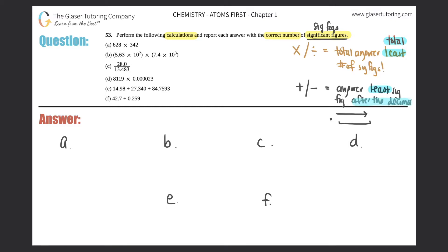Let's try 628 times 342. First, put this into the calculator and then determine how many sig figs we need. In the calculator, 628 times 342 gives 214,776.